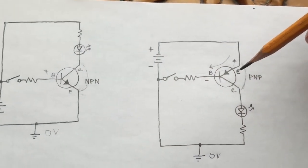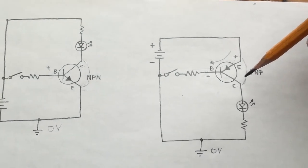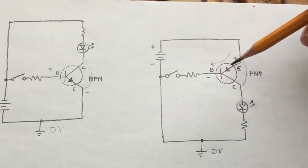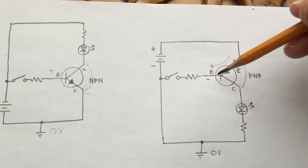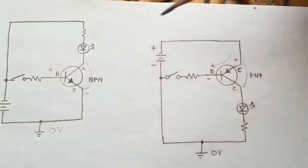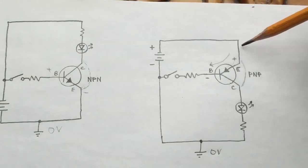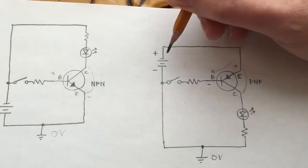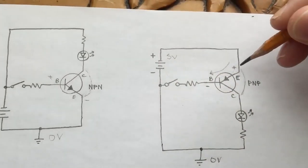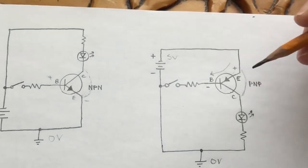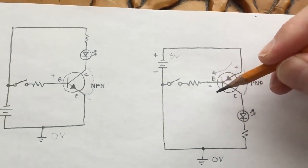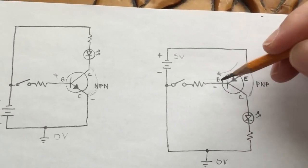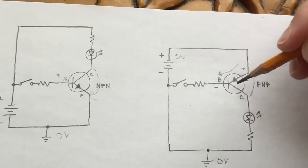PNP transistors are also available with very similar specifications. The difference is the control signal — the voltage to turn the PNP transistor on has to be lower than the emitter voltage. The emitter becomes the common reference for the control signal. With a 5 volt battery, the emitter is always at 5 volts, and we have to take the base voltage lower than 5 volts to turn it on.